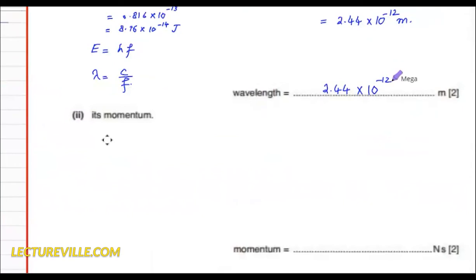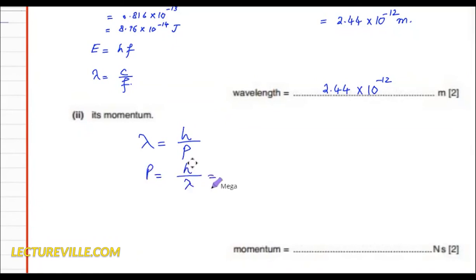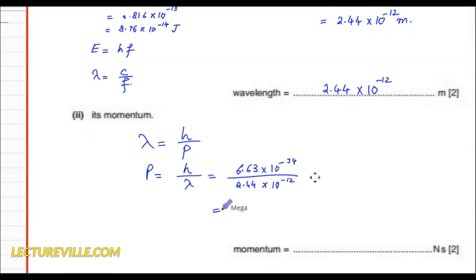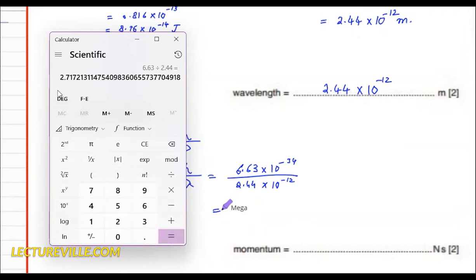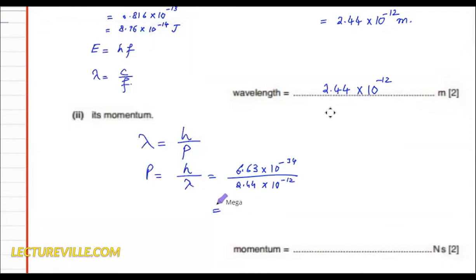Now, for the momentum — if you remember the de Broglie wavelength, which is h over momentum, then momentum equals Planck's constant divided by wavelength. So it will be 6.63 into 10 to the power minus 34 divided by 2.44 into 10 to the power minus 12. That gives 2.72 into 10 to the power minus 22 kg·m/s.